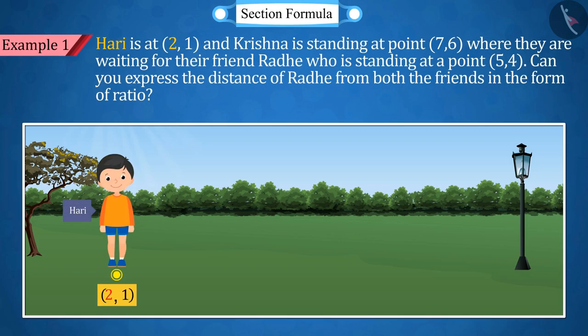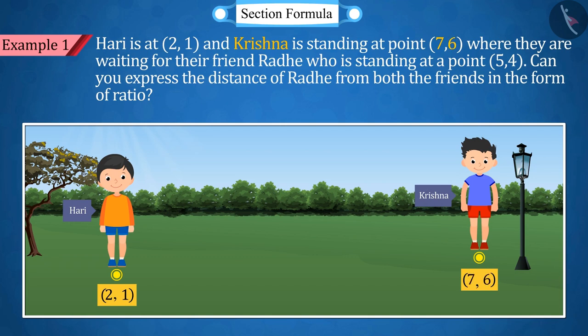Hari is at point (2,1) and Krishna is standing at point (7,6), where they are waiting for their friend Radhe who is standing at point (5,4).